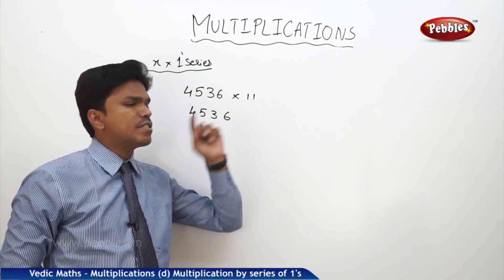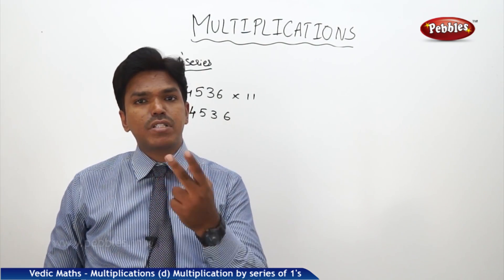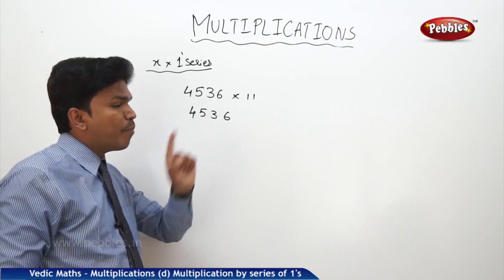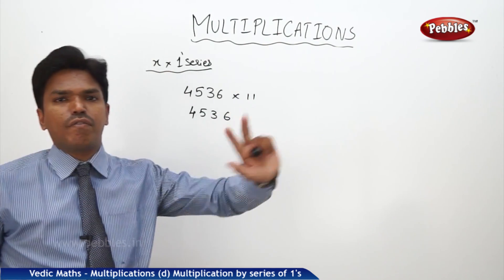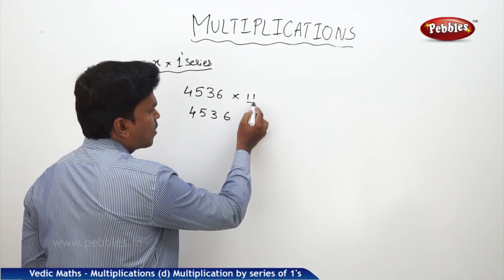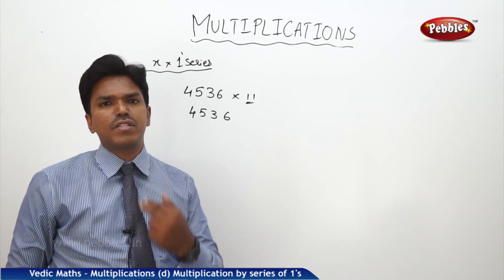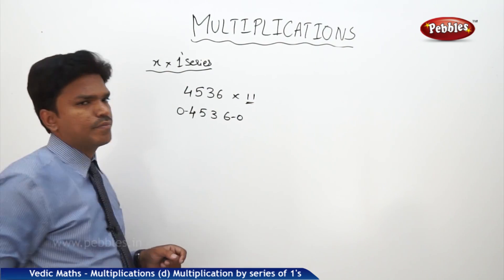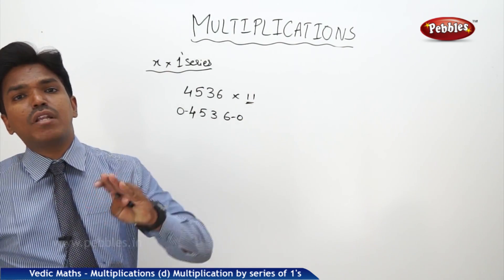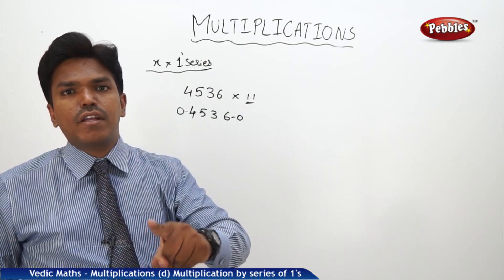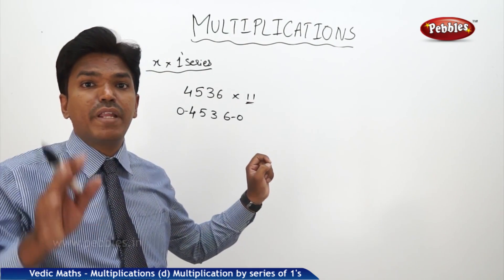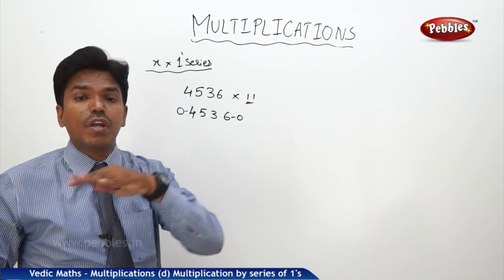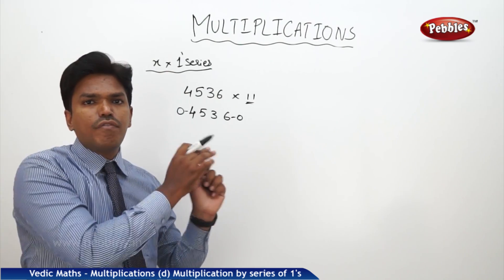Now, after dropping the number, check how many number of 1s are there. In 11, there are 2 ones. You have to add zeros to the given number — how many zeros? Just one number less than the number of 1s. Since there are 2 ones, make it one less, that is 1. So, one zero after the number and one zero before the number.